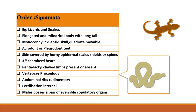Order Squamata consists of lizards and snakes. In the case of lizards, the body is slightly compressed, it has two pairs of limbs, the exoskeleton is not removed by molting, the nictitating membrane is present, and the urinary bladder is present. While in the case of snakes, the body is cylindrical, limbs are absent, the exoskeleton is removed by molting, the nictitating membrane is absent, the tongue is bifid, and the urinary bladder is absent.